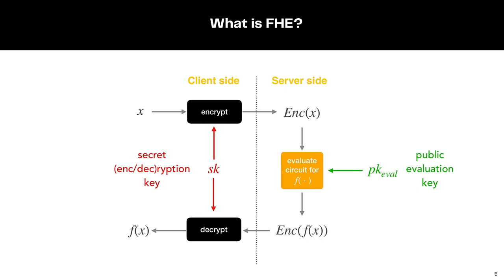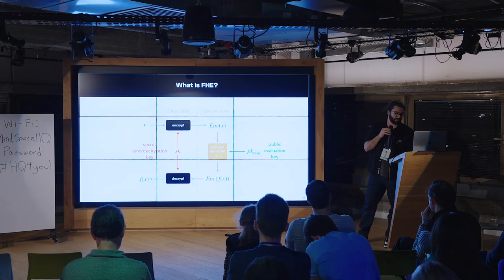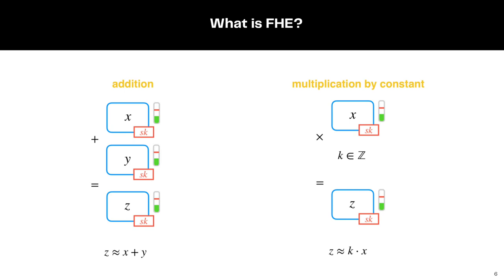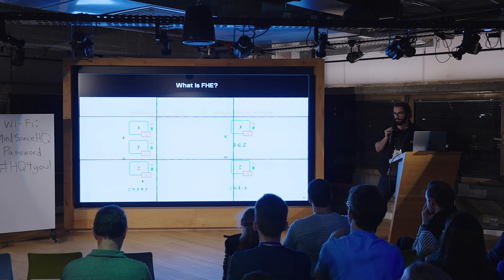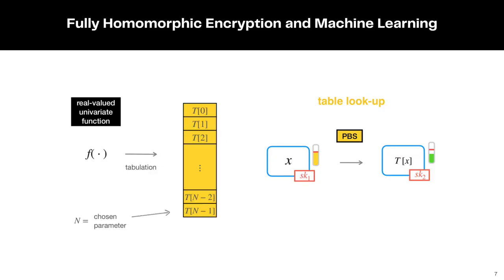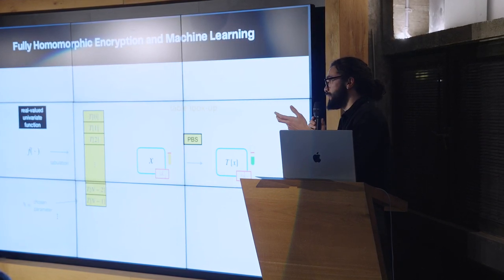That allows a lot of use cases like the ones I mentioned, where the model — which is essentially just a function f — is applied to the encrypted data. At Zama, we use TFHE, which allows us to do three basic operations that are all we need for privacy-preserving machine learning. The first is additions between ciphertexts, the second is multiplication by a constant, and the third — the most interesting one — is PBS or table lookup, which allows you to evaluate a univariate function on the data.